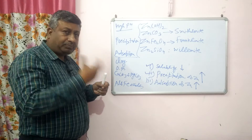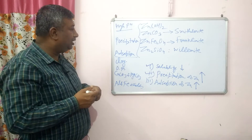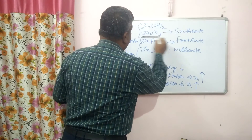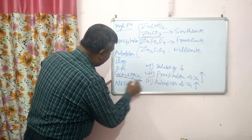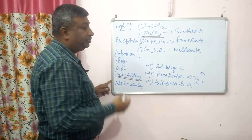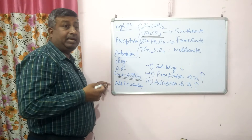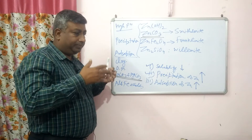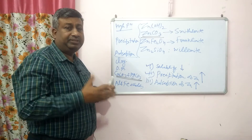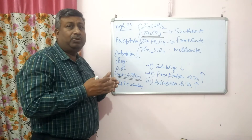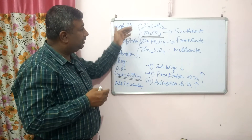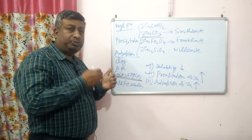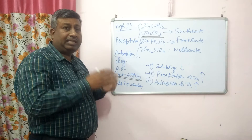That's why zinc availability is reduced in soil solution. At high pH in calcareous soil, zinc carbonate formation takes place, and zinc is also adsorbed on calcium carbonate and magnesium carbonate. This is the reason that zinc availability is very greatly reduced in calcareous soil.